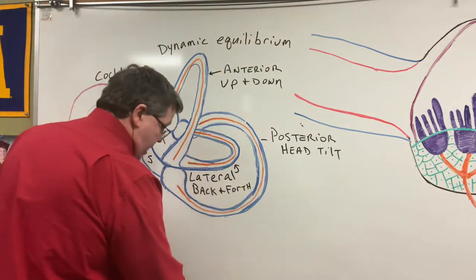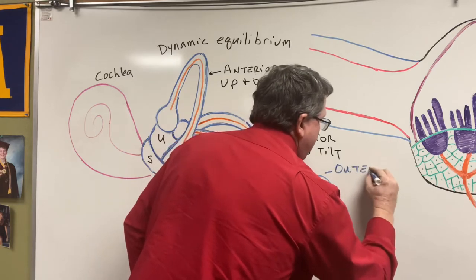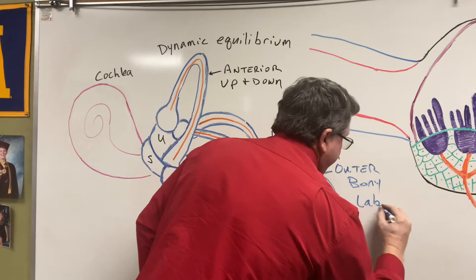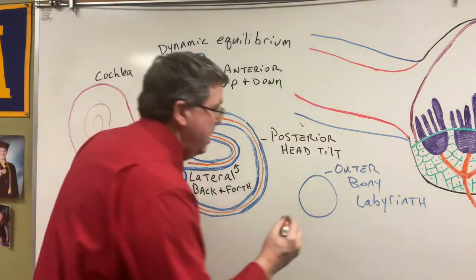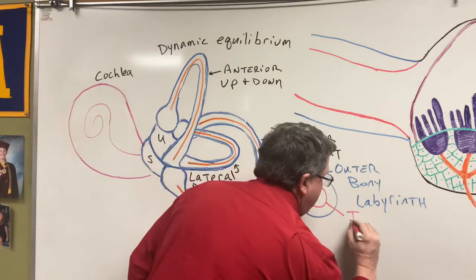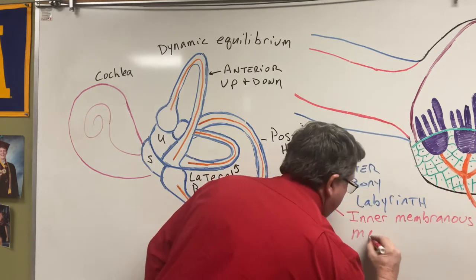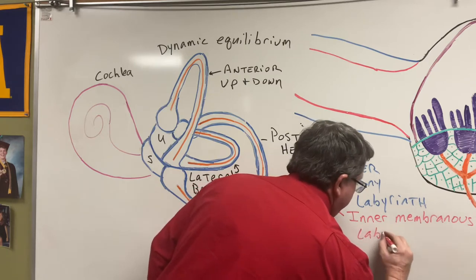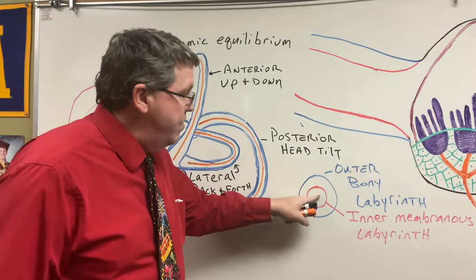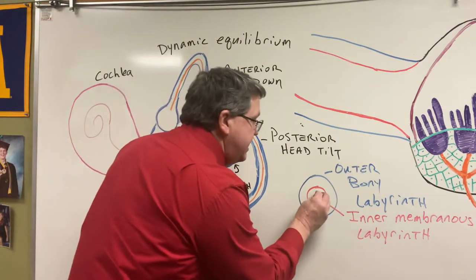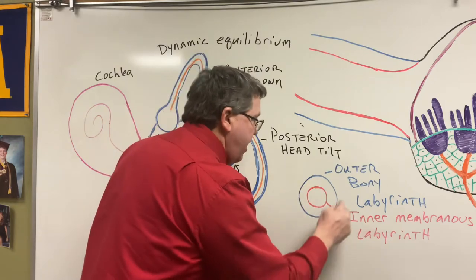This is the way it would look. This blue part is actually made up of bone and we call this the outer bony labyrinth. Then on the inside I have a membrane, and we call this the inner membranous labyrinth. So the outer part is the semicircular canal. The part inside the inner membranous labyrinth is called the semicircular duct.